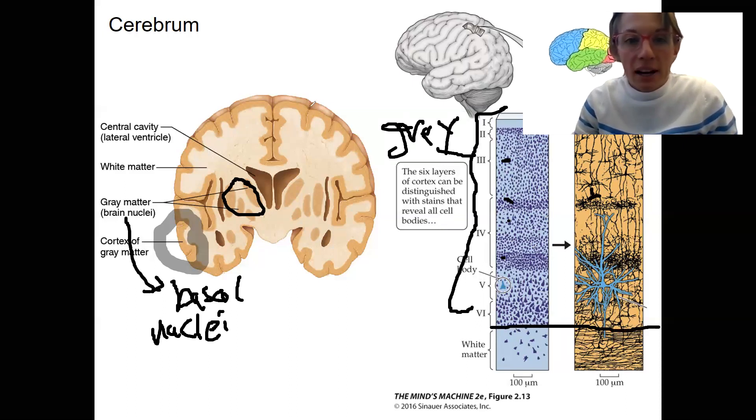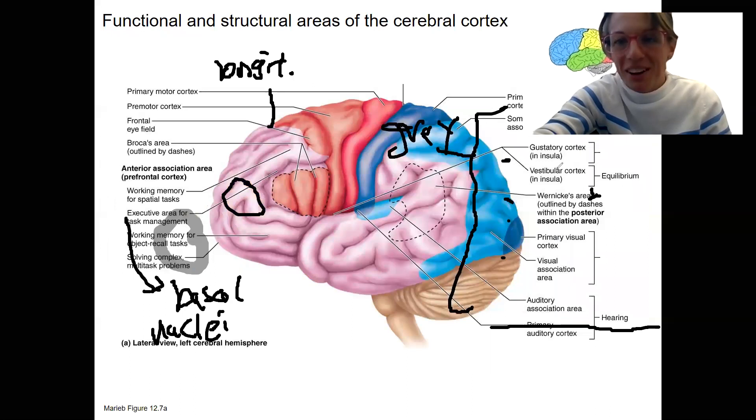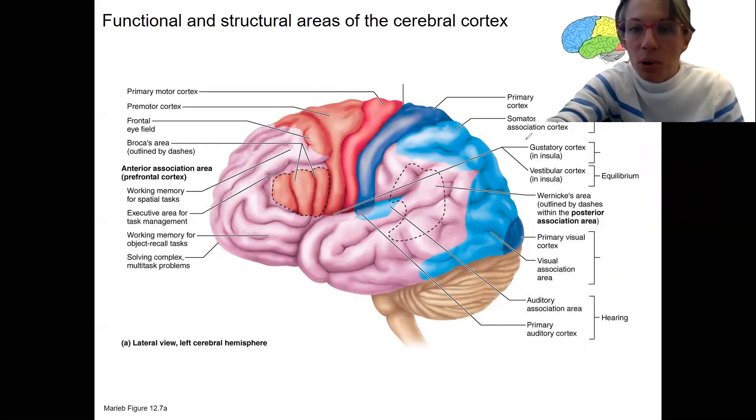The cerebral cortex itself, so here's our longitudinal fissure right here, is composed of different structural areas that have different functions. We're not going to learn all of them. There's going to be a few that I want you to know about that are going to come up as we go through, talk about some of the senses, for example, and some of the motor systems.